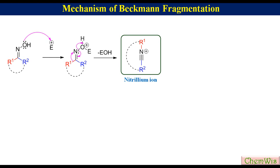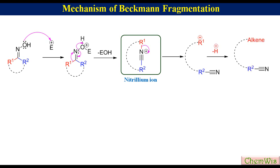Now, this C-N bond breaks to generate the nitrile and a carbocation. The carbocation can eliminate a proton to produce an alkene, or it can combine with a nucleophile if available to produce the substituted product.